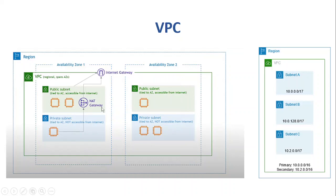Within VPC, we have the flexibility to create subnets. We can see we have two subnets in the first availability zone — one private and one public — and the same for availability zone two. Subnets are defined within specific availability zones and are of two types: public and private.